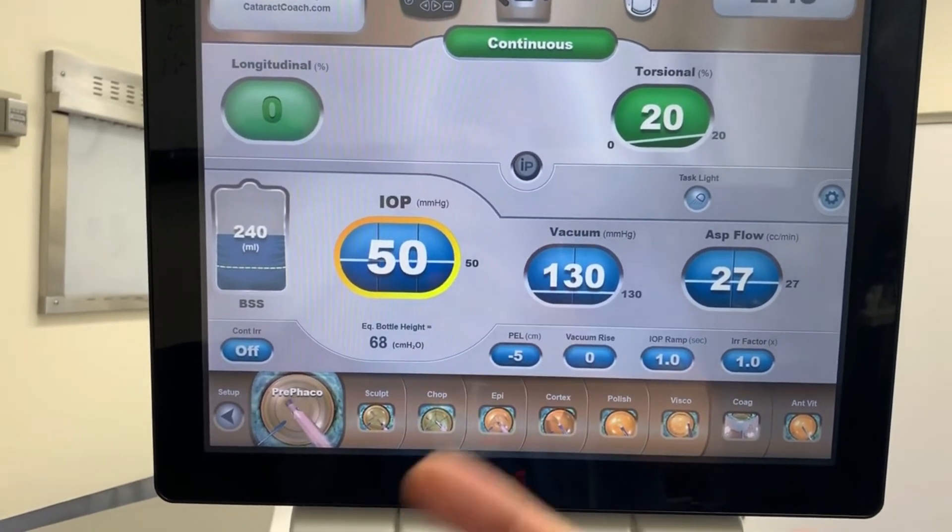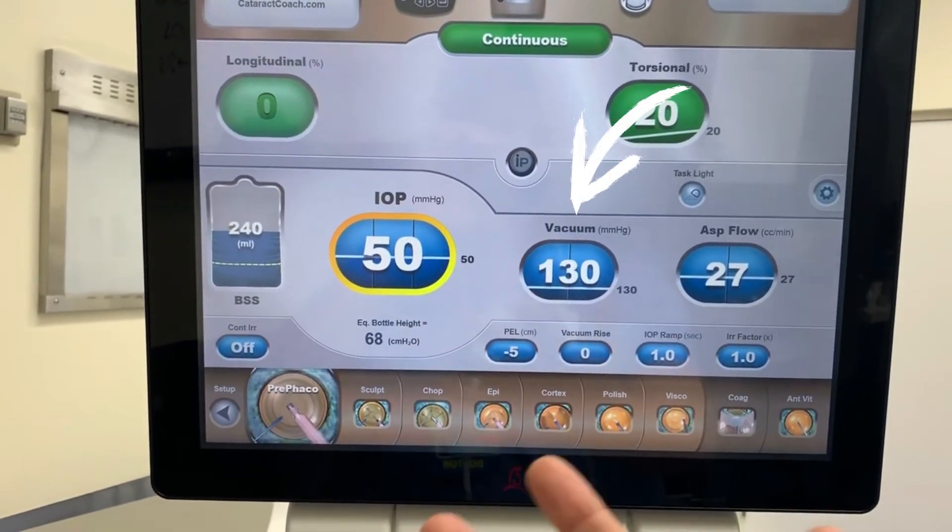Second control is vacuum. The difference in fluid pressure among two points. Negative pressure measured in milliliters of mercury, mmHg. Vacuum determines how well, once occluded on the phaco tip, nuclear material will be held to the tip, holding power.